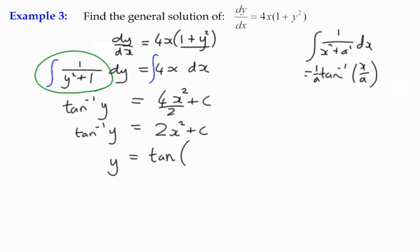So it becomes the tan of 2x squared plus c. That's our general solution, and if we had any more information, we could find a particular solution. But what we do need to work on are all our different integration techniques like we just did there with the inverse tan.